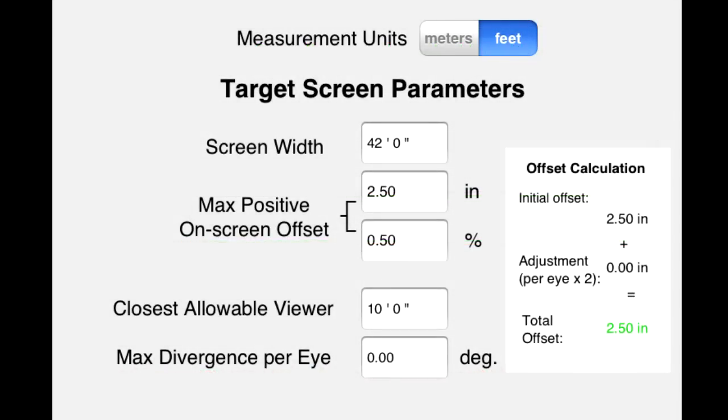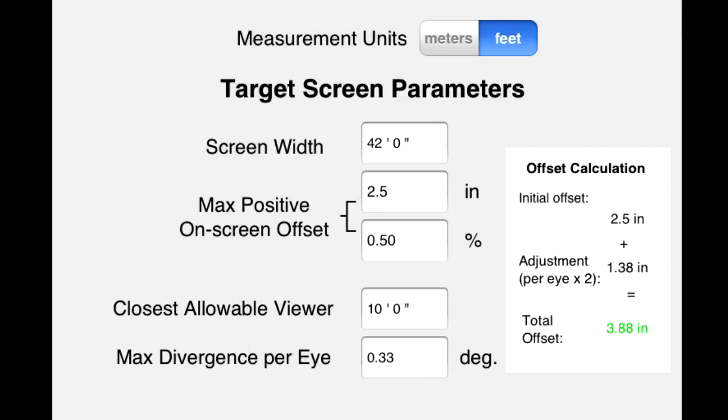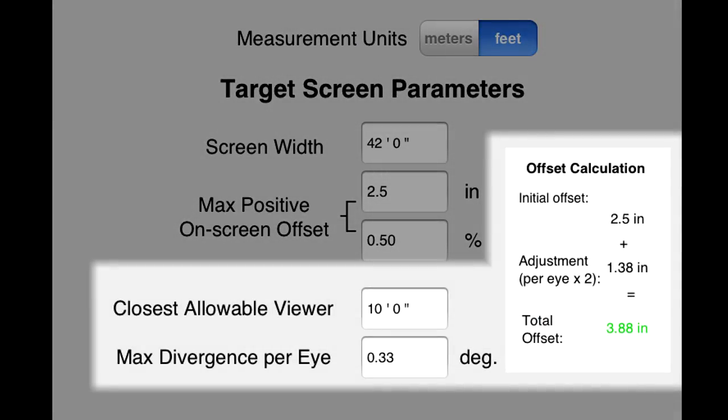The way the calculator implements this is very straightforward. You simply enter the closest distance you ever expect a viewer to be seated and the maximum angle of divergence in degrees per eye which you deem as being acceptable. The app then calculates how much additional on-screen offset that will give you based on the other values and it adds it to your base max positive on-screen offset and shows you the results in this box to the right.